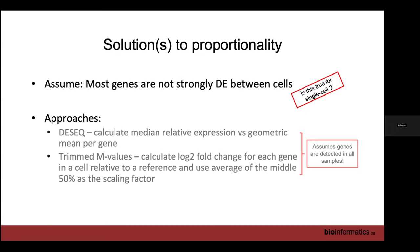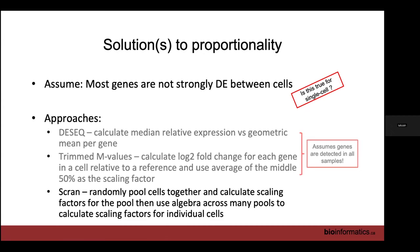Instead, scran was developed. Scran takes a bunch of cells, pools them together so they look like bulk RNA-seq, then calculates DESeq2 or TMM on that pool. It does this many times with different combinations of cells, and then uses algebra to separate those randomly generated pools and their size normalization factors back into single-cell normalization factors. That solved the proportionality problem.